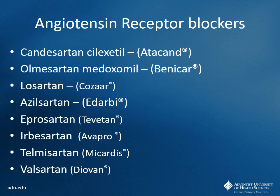When switching from valsartan to another ARB, any ARB is therapeutically acceptable. The choice depends on insurance coverage and patient cost — for example, losartan is available at Publix and Walmart very cheaply. If a patient can't afford that, irbesartan might be an option. Since ARBs are therapeutically interchangeable, the main practical factors are cost, insurance formulary, and patient preference.